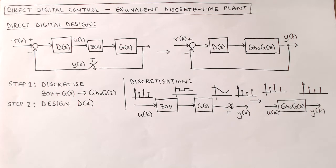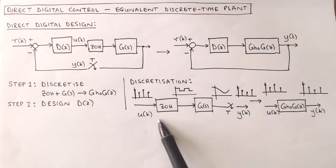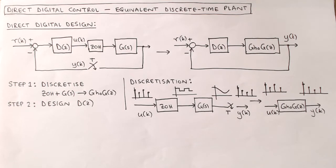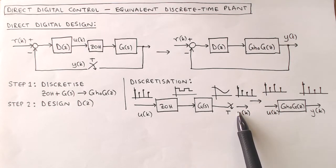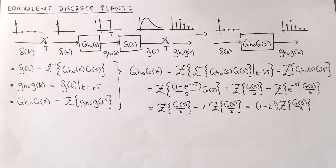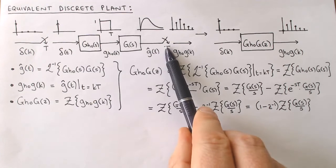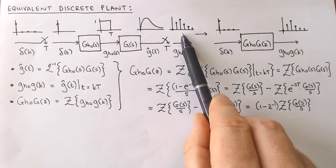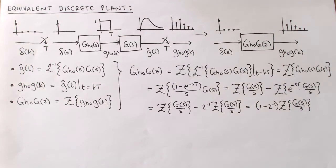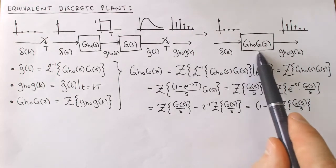In this video we focus on the first step, shown in this diagram. We take the combination of the zero-order hold, continuous plant, and sampler, and try to find a discrete model that behaves the same way. We calculate the equivalent discrete plant model by applying a discrete impulse on the input and calculating the discrete output signal. This output signal is the discrete impulse response of the equivalent discrete plant, and we can apply the Z-transform to find its discrete transfer function.